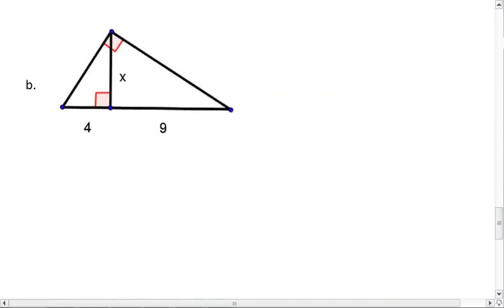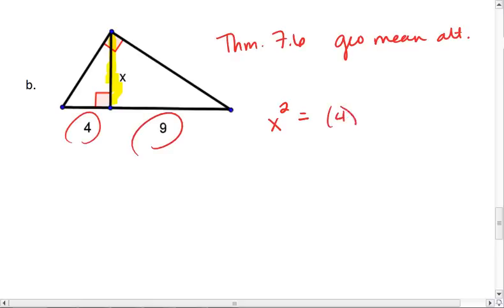All right. Part B. Notice we're working with the altitude. This is theorem 7.6, which we can call the geo mean altitude. And that tells us that the altitude is the geometric mean of the two parts of the hypotenuse. So x squared equals 4 times 9, which is 36. x equals 6.